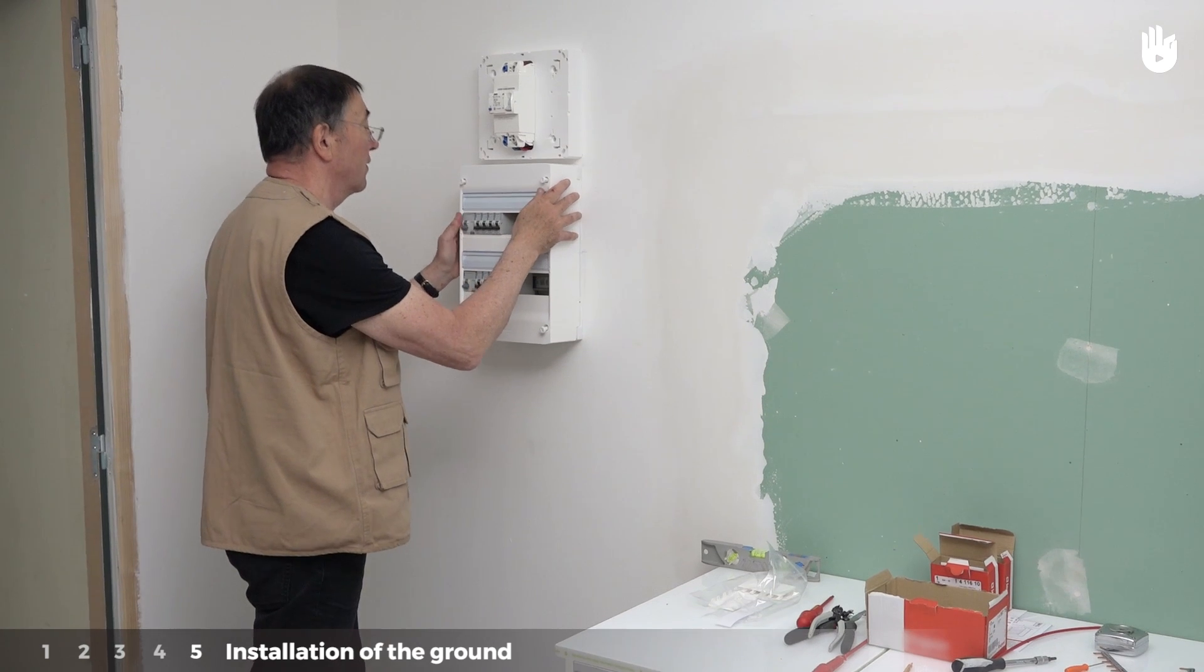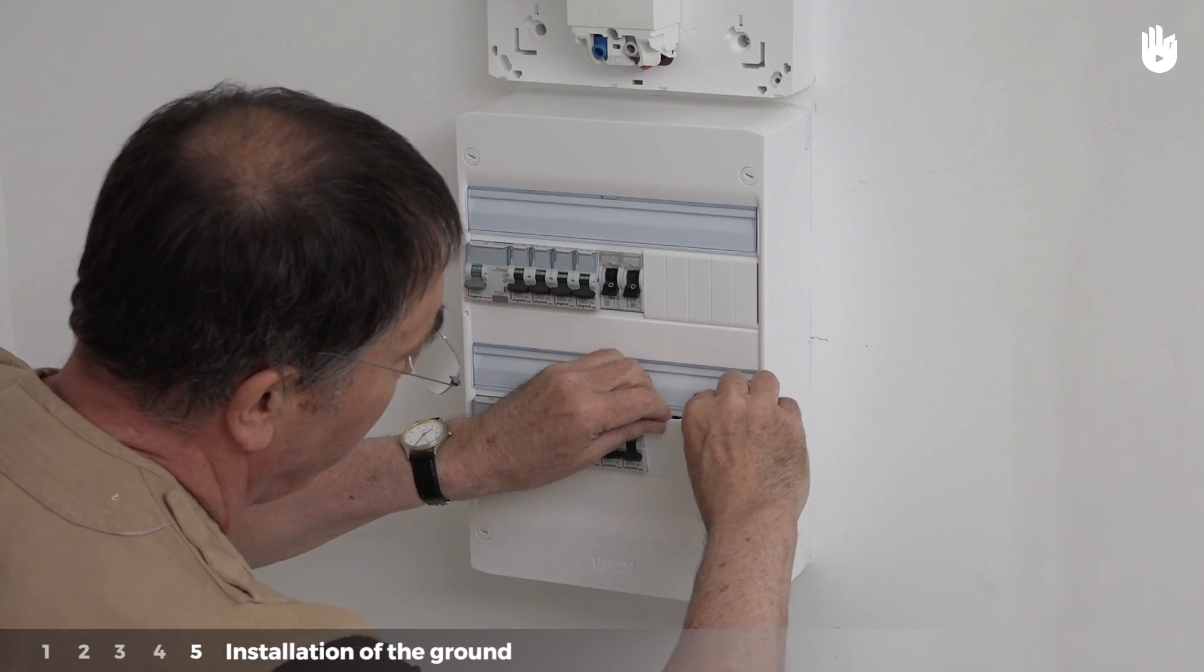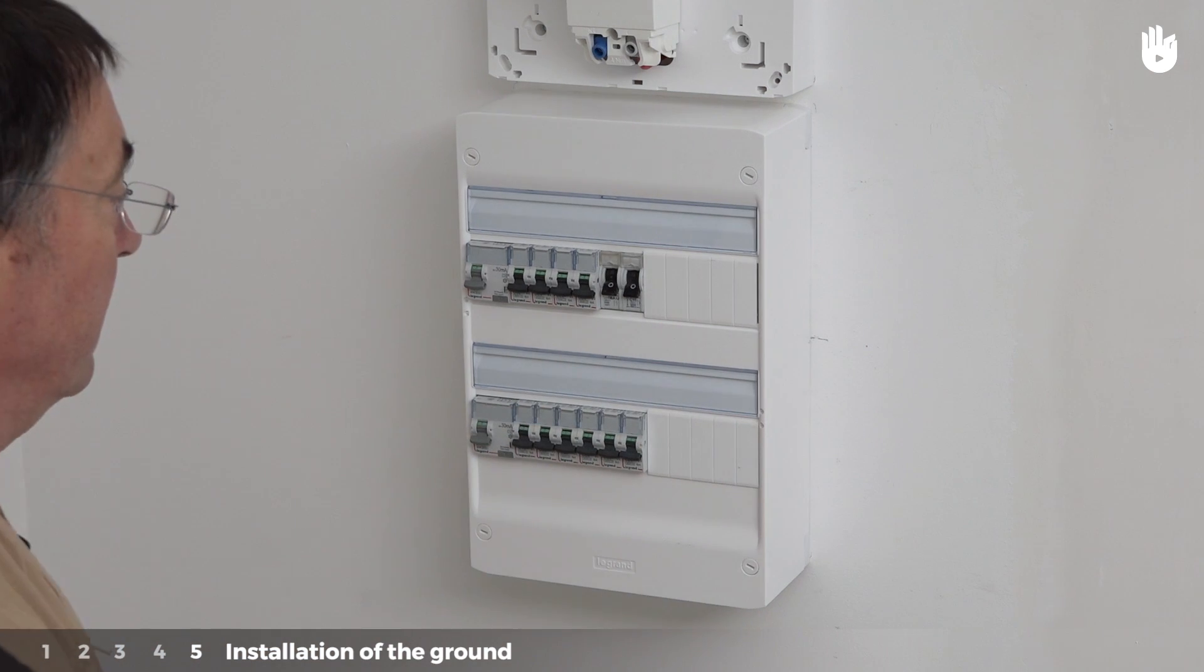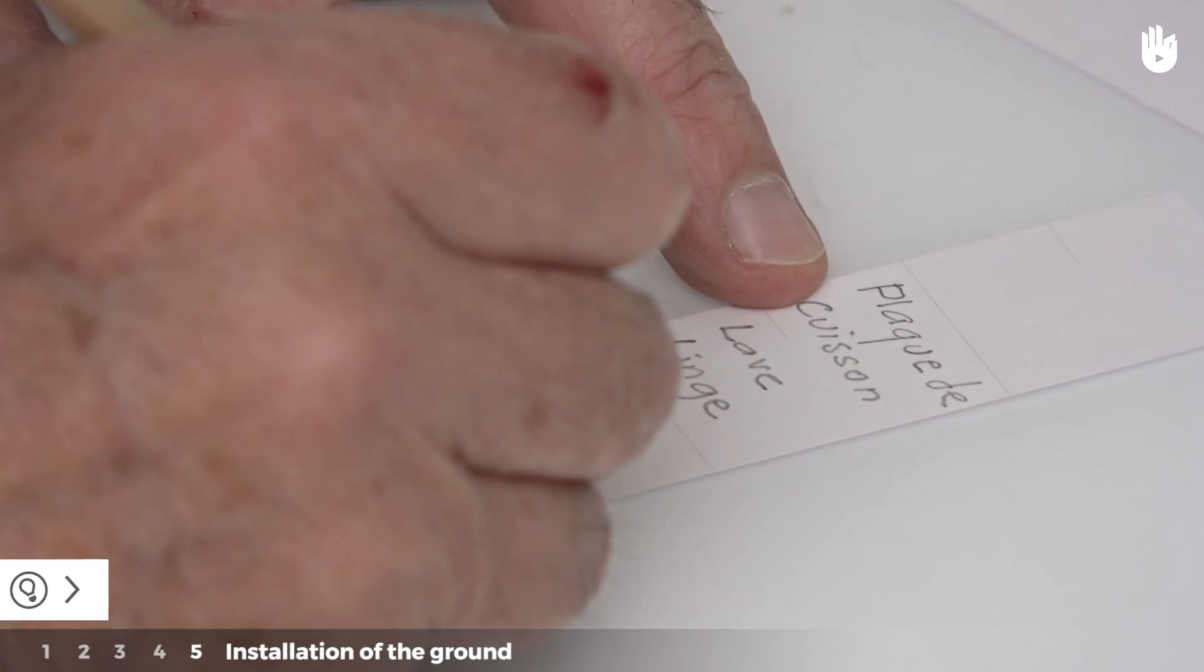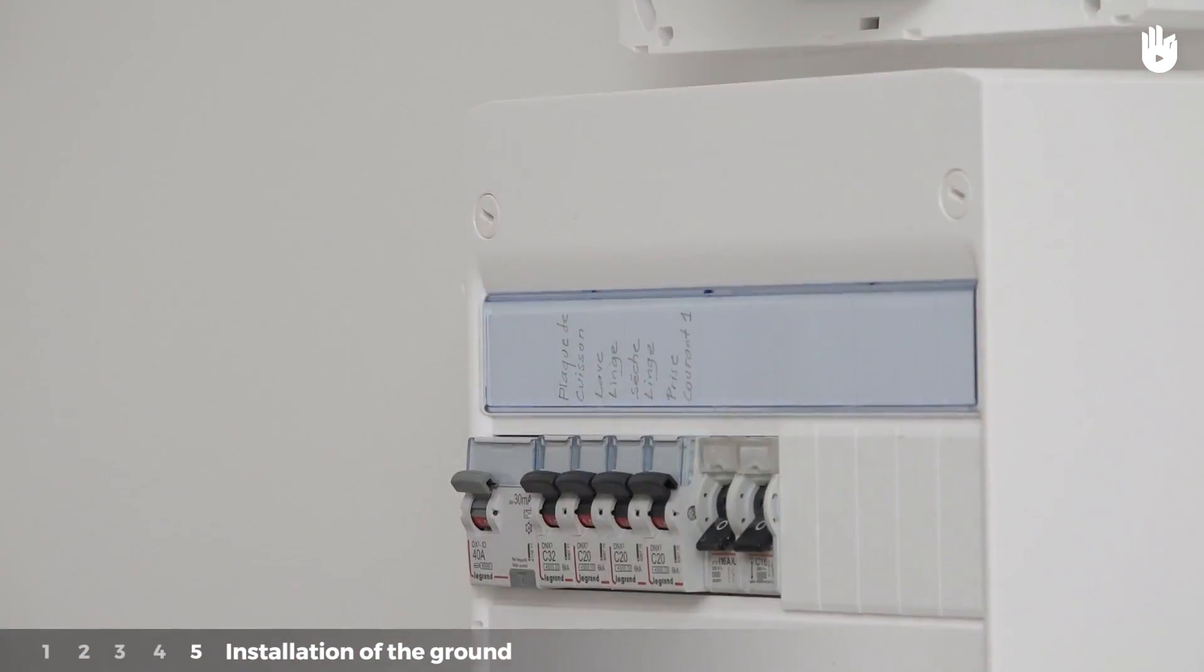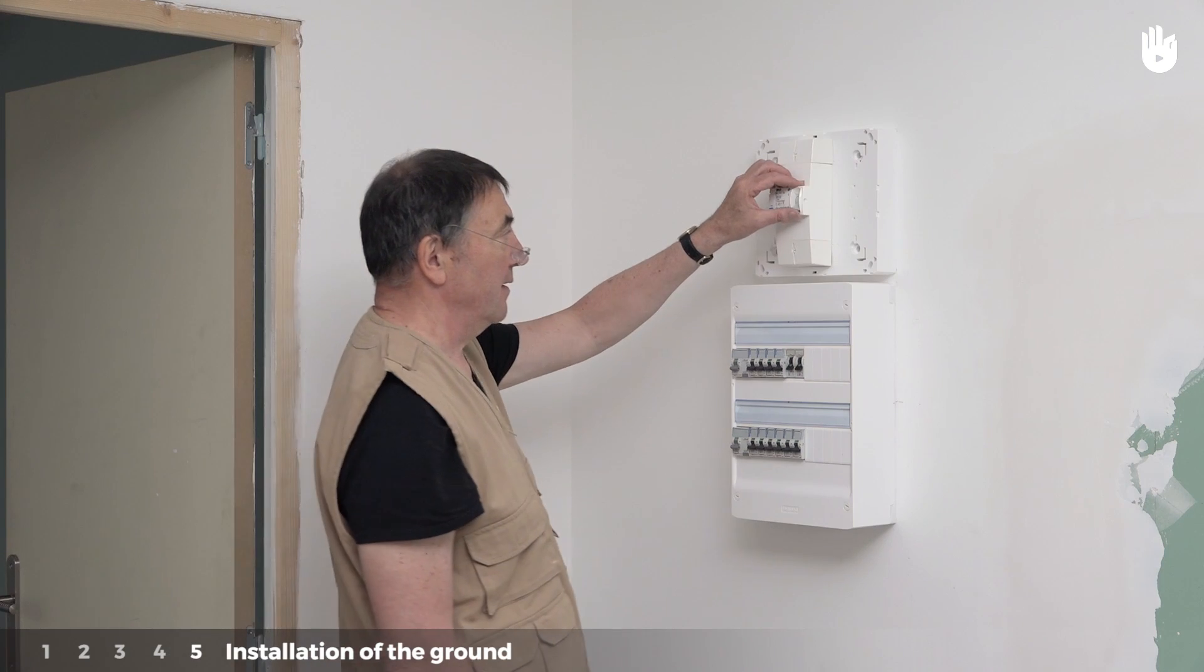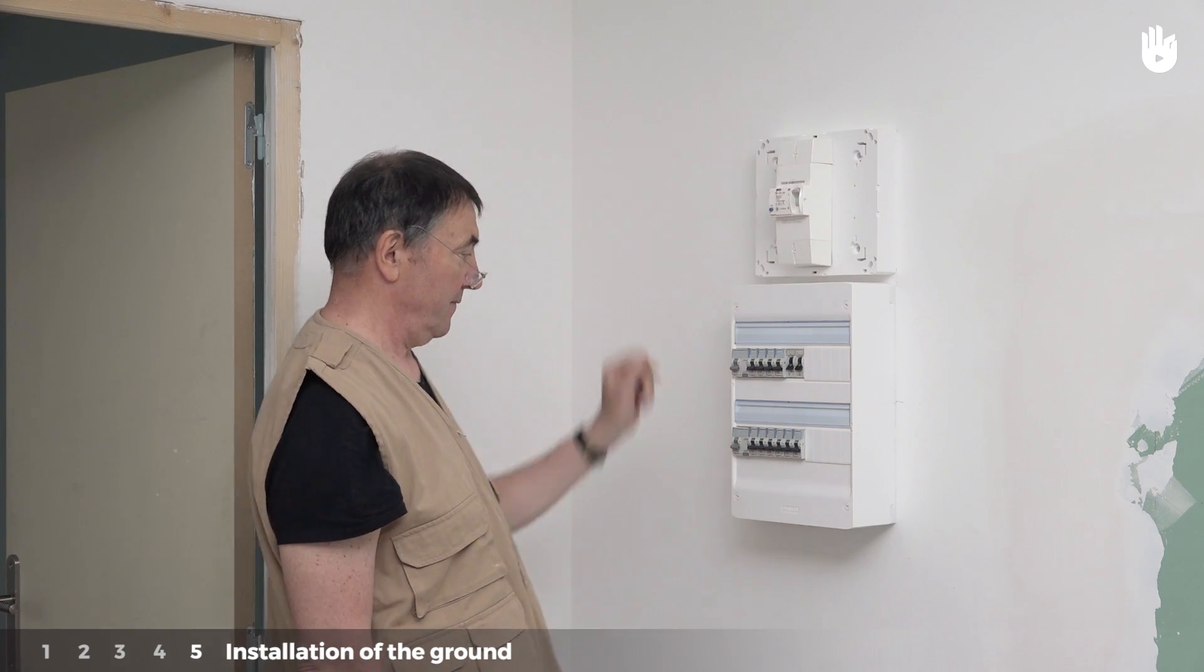Reinstall the cover of the panel. Tighten the screws in all four corners. Close up the empty spaces at the end of each row with the clip-on covers. Tip: Label each of the modules. Turn the general supply back on and then the various circuit breakers.